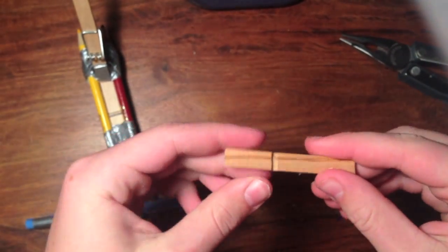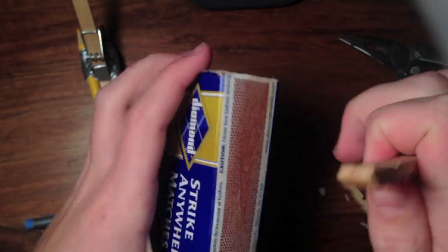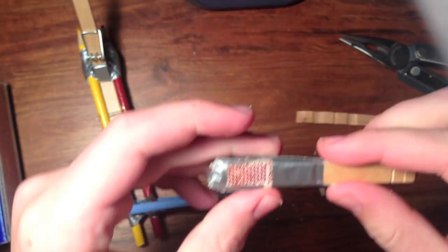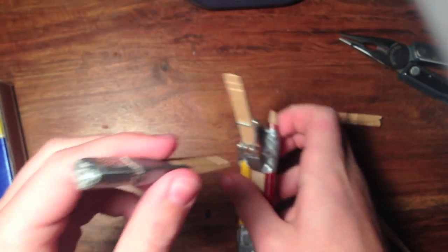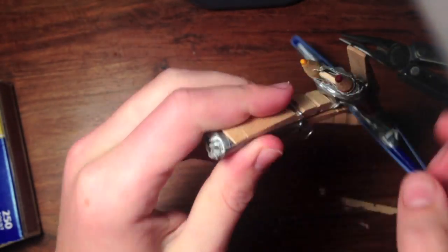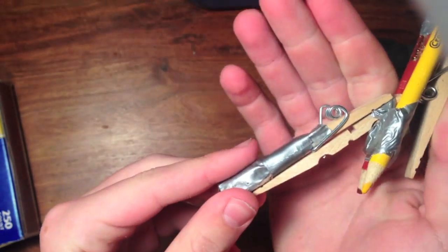Next, take your matchbox and cut out a square big enough to fit right here. Once you're done, it should look something like this - this will be your striker. This will slide right up here in your handle so you can pull it out and put it back in.